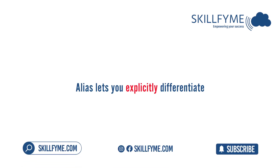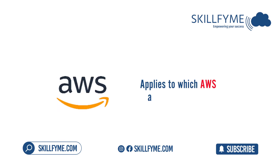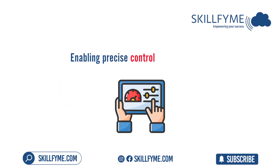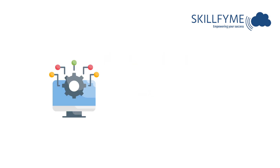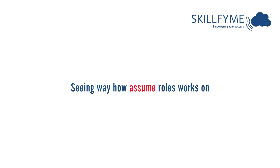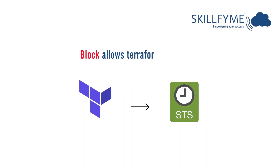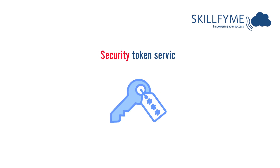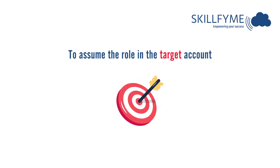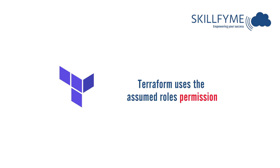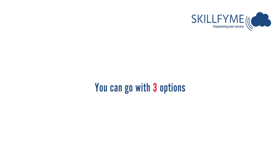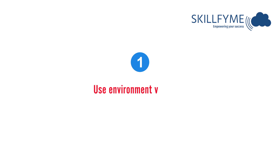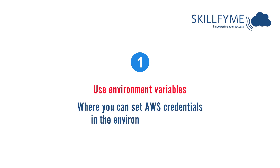Why use aliases? Aliases let you explicitly differentiate which provider configuration applies to which AWS account, enabling precise control over resources. The alias keyword identifies a specific provider configuration. For assume roles, the assume_role block allows Terraform to use STS (Security Token Service) to assume the role in the target account, and Terraform uses the assumed role's permissions to manage resources securely.